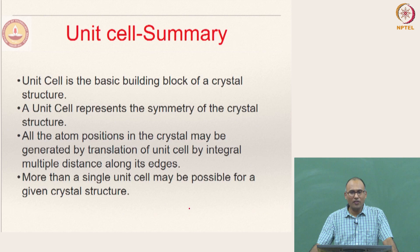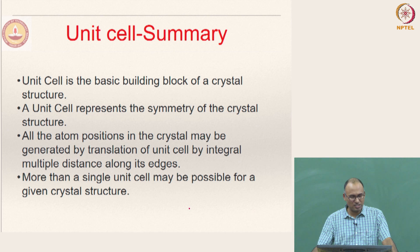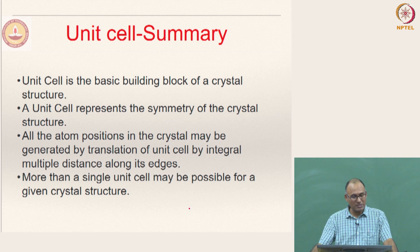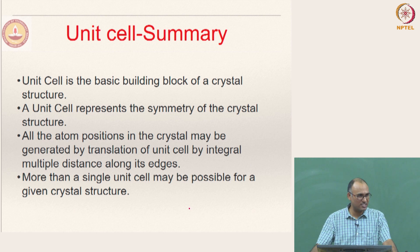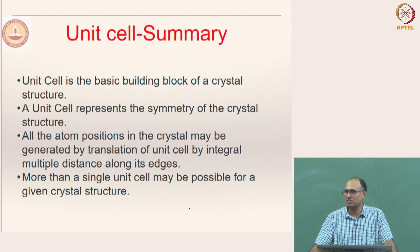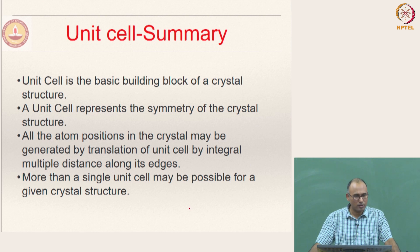In summary: a unit cell is the basic building block of a crystal structure and represents the symmetry level of that crystal. All atom positions in the crystal may be generated by translation of the unit cell by integral multiples of its lattice parameters or lattice vectors. More than one unit cell may be possible for a given crystal structure.